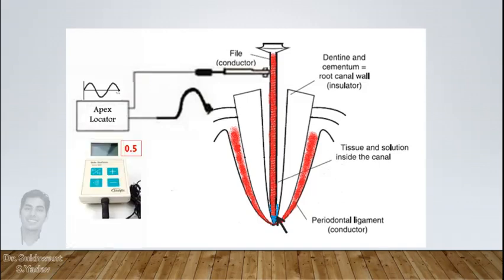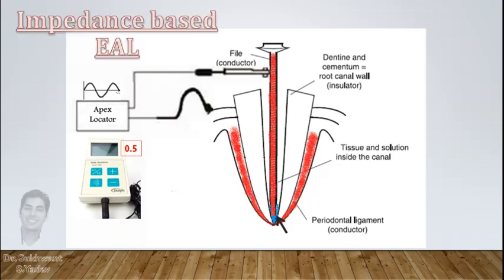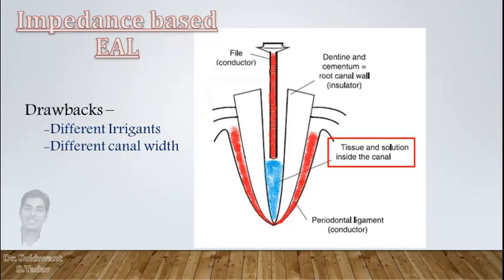Another finding was that there is sharp change in impedance at apical constriction which is recorded as 0.5 mark and considered best for working length determination. This is the principle of second generation apex locators. Main aim is to record apical constriction, but because the sharp change in impedance value differs in case of different irrigants or different canal widths, it cannot be recorded accurately.